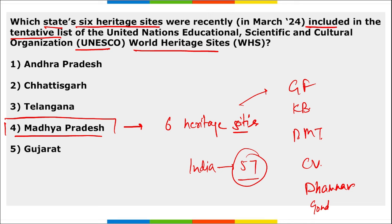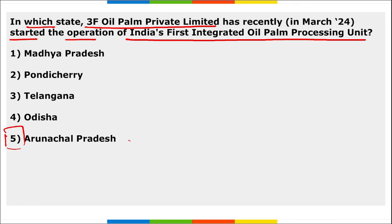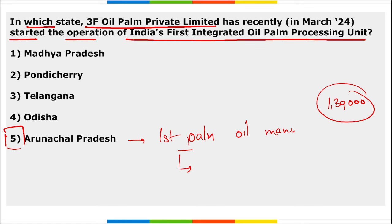3F Oil Palm Private Limited has started operations of India's first integrated oil palm processing unit in Arunachal Pradesh. This aims to reduce India's dependency on oil imports. Around 1,30,000 hectares of suitable land has been selected for palm oil manufacturing.